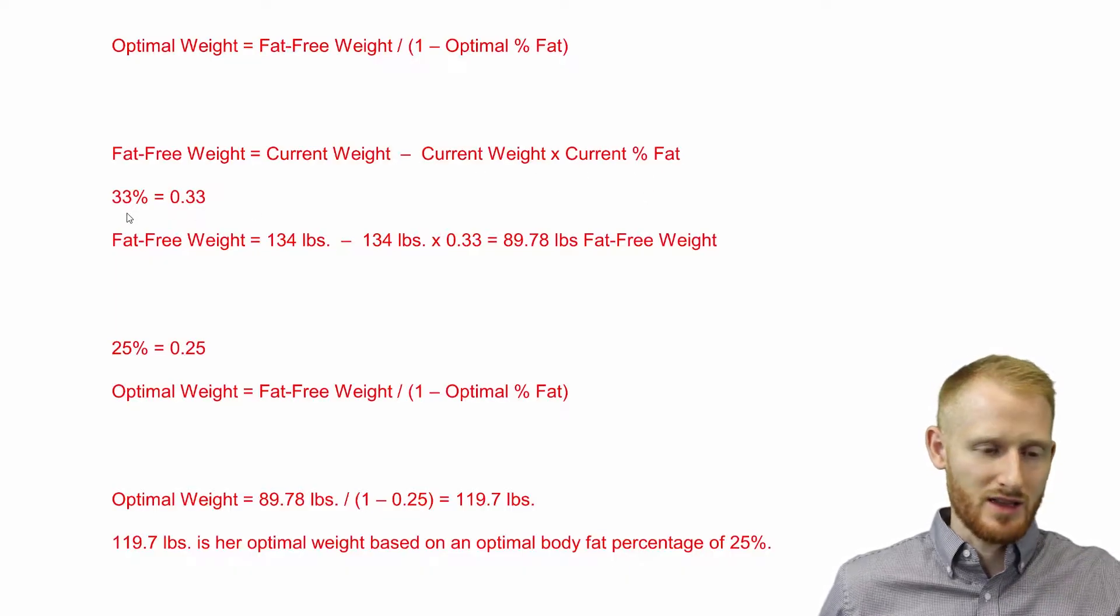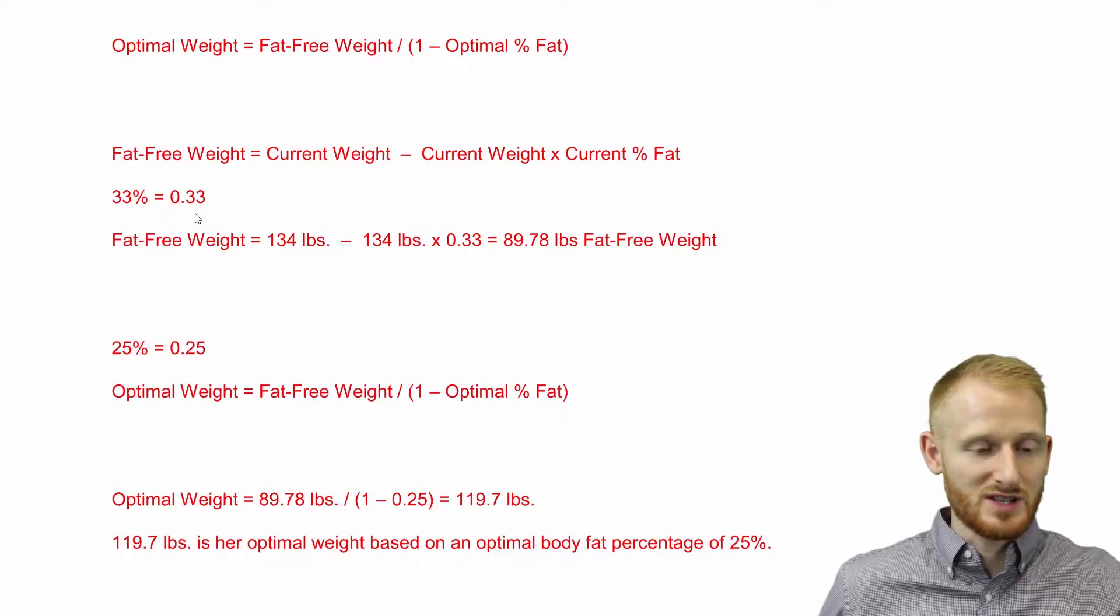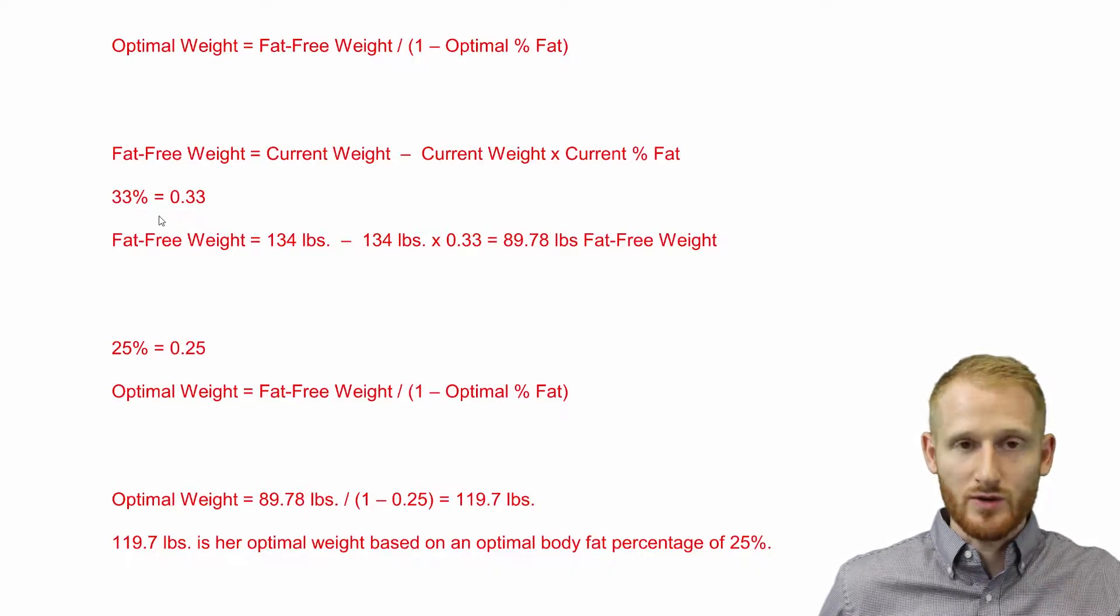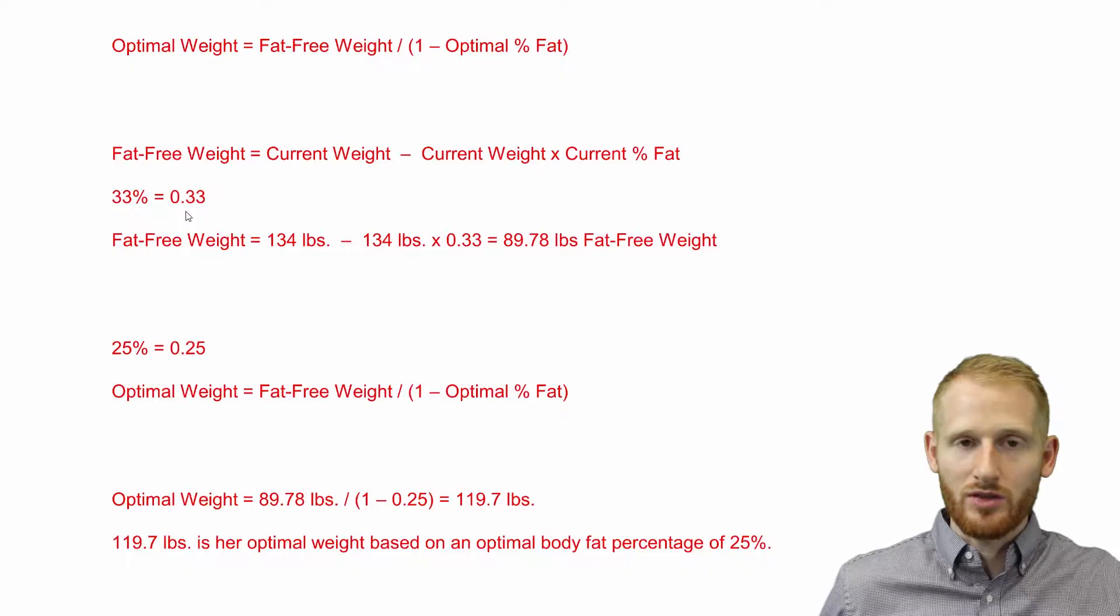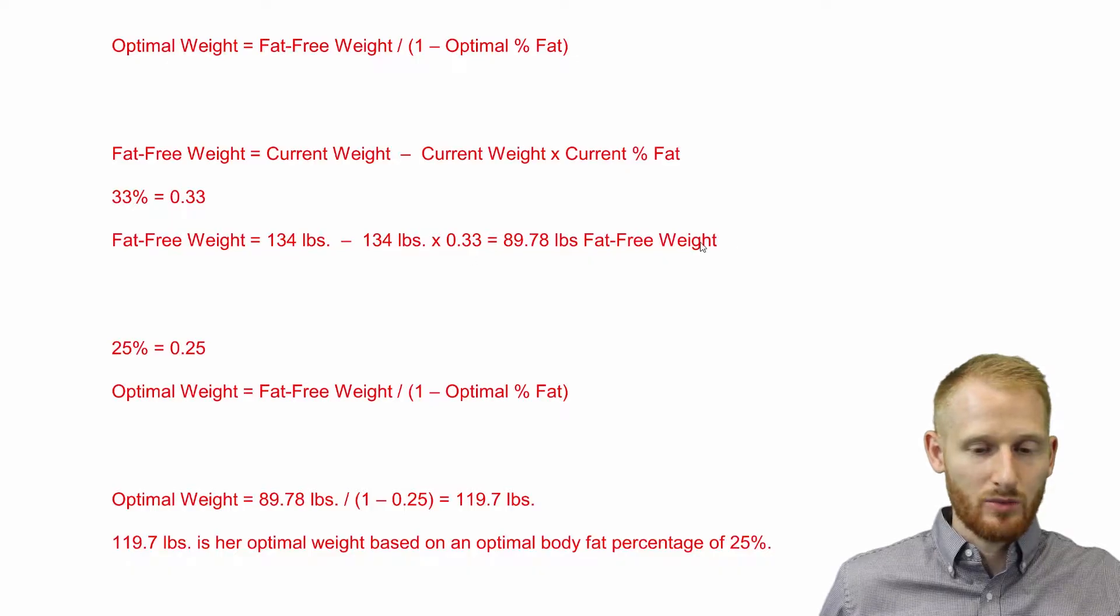Her body fat is currently at 33%, so we need to transform that into a decimal by dividing by 100 or moving the decimal place over two times. That gives us 0.33. If we put this along with her current weight into the equation, we end up with this.